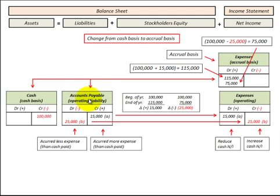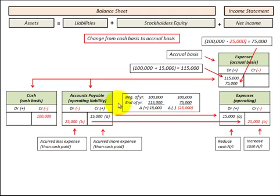Looking at accounts payable: where accounts payable had a credit balance of $15,000 and our cash account had a credit balance of $100,000, our balancing entry to accrued expense would be $115,000 — the $100,000 credit balance in cash plus the $15,000 credit balance in accounts payable. In the case where we had a debit balance of $25,000 in accounts payable and a cash credit balance of $100,000, our balancing entry to accrued expense would be $75,000 — the $100,000 minus the $25,000 debit balance in accounts payable.